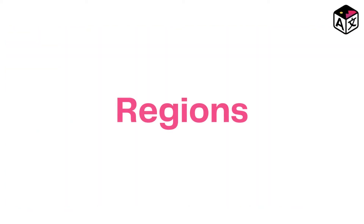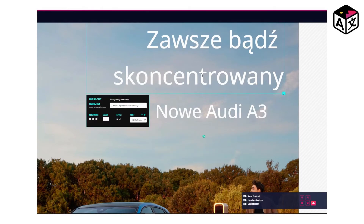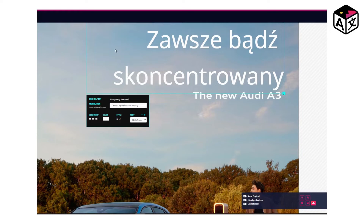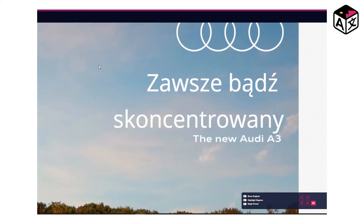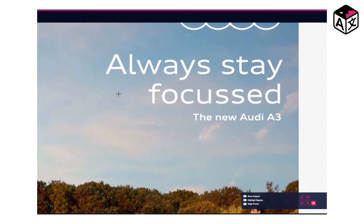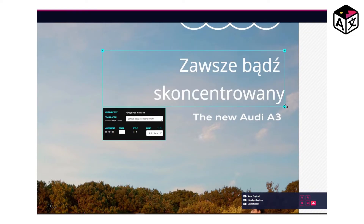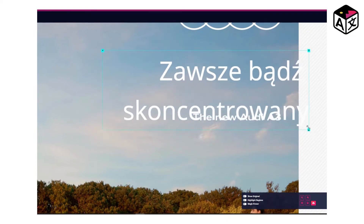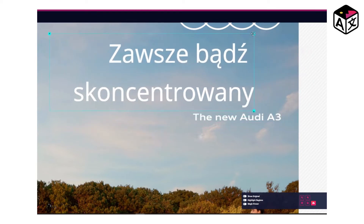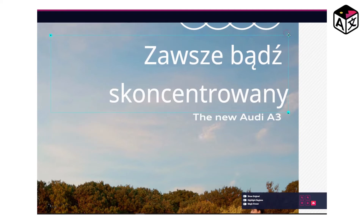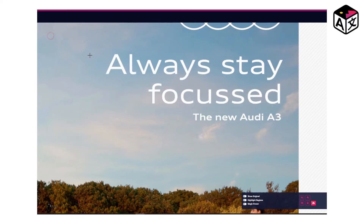Regions: This is a very great feature. Here, ImageTranslate detects the text on the advertisement and creates a region around it. The region can be deleted by clicking the X sign on the top left corner and recreated by simply dragging the cursor with a left-click hold. You can also change the size of the region by clicking the bottom right corner, and change the position of the text by clicking the top right corner and moving the region.